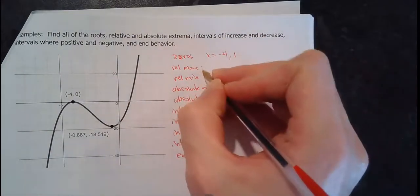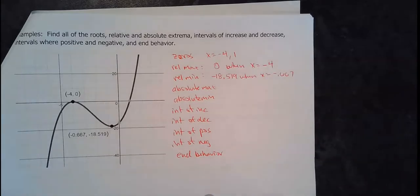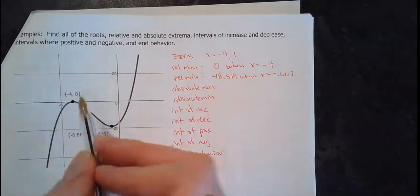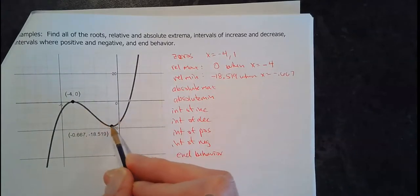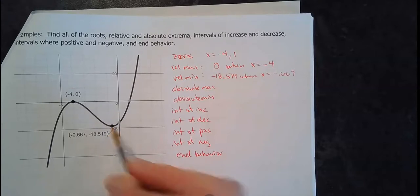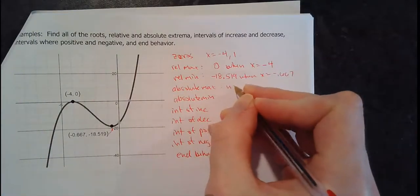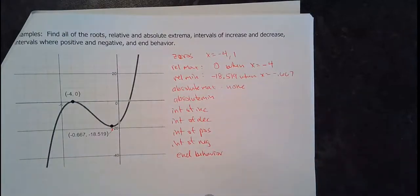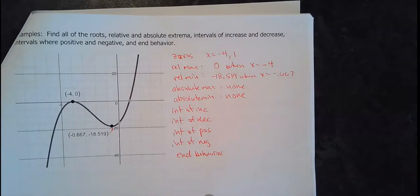Now fill in the mins and maxes — remember, we want y-values. There's only one relative max and one relative min. The relative max is the top of the hill — a positive-to-negative turning point — right here. There's a negative-to-positive turning point, which is the relative minimum. For absolute max and absolute min: the highest this graph ever goes is infinity, but we can't include infinity, so absolute max is none. The absolute minimum is also none, because it goes down forever.